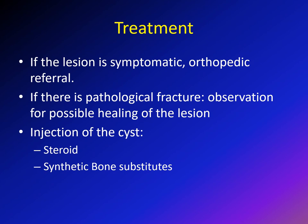Regarding treatment: if the cyst was discovered accidentally on x-ray for another cause, no treatment is necessary. If symptomatic — causing pain or pathological fracture — orthopedic referral is needed. With a pathological fracture, the initial treatment is observation, as there is a chance the lesion will heal with fracture healing. If the cyst persists or causes pain, it can be injected with steroids or synthetic bone substitute.